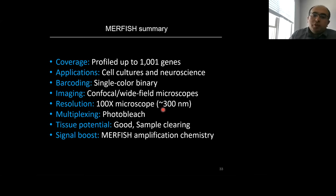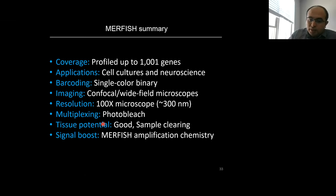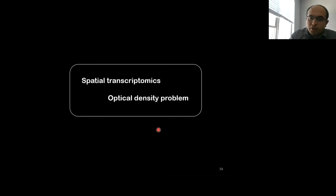MERFISH summary: it can look at up to 1,000 genes; it works in cell cultures and is widely used in neuroscience; it uses single-color binary barcoding unlike seqFISH's color barcoding; high-resolution microscopes are needed; photo-bleaching is used for multiplexing instead of DNase; and branched DNA amplification chemistry is ready for thicker samples.